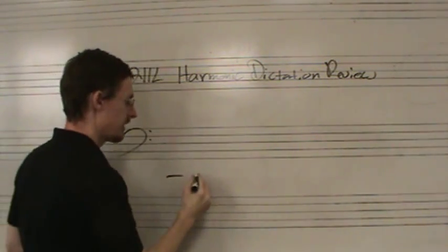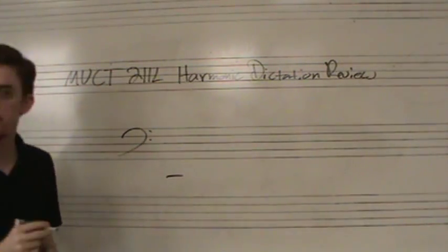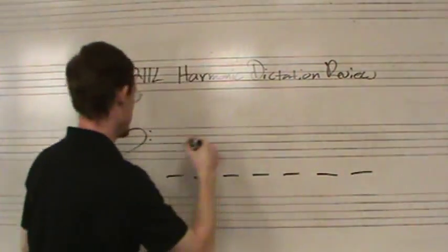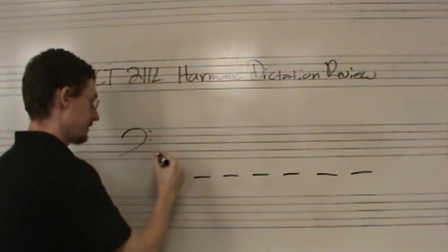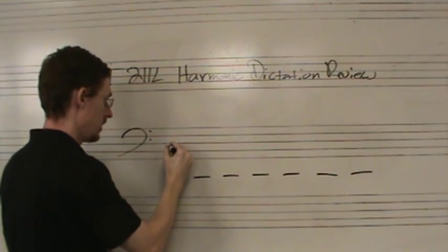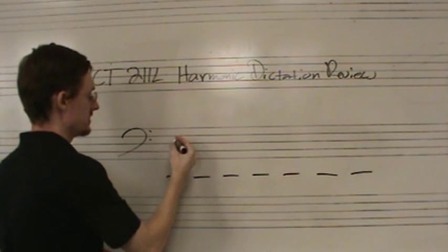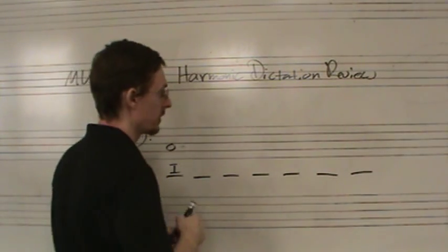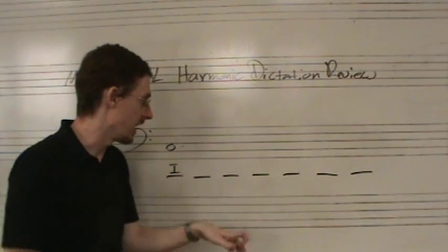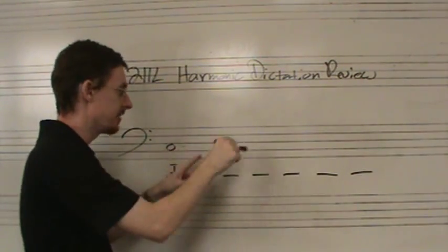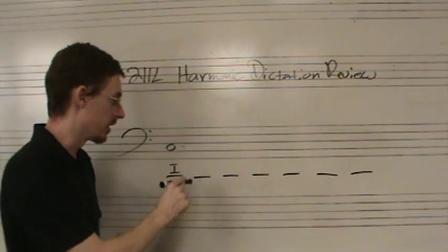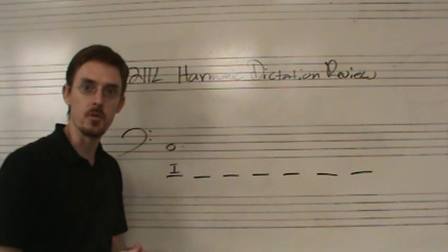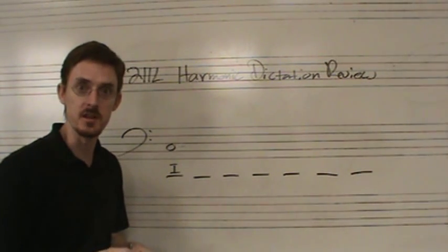Start with the bass clef. All of these will be seven chords long, so we put seven spaces. We're going to start in the key of C major, so no key signature. As always, do in the bass is going to start us off in the I chord in root position. I'm going to play a bass line in the left hand. You are responsible for dictating that left hand bass line, hearing the qualities of the chords, and deducing from the qualities and the bass line what the chord function is and what its inversion is.